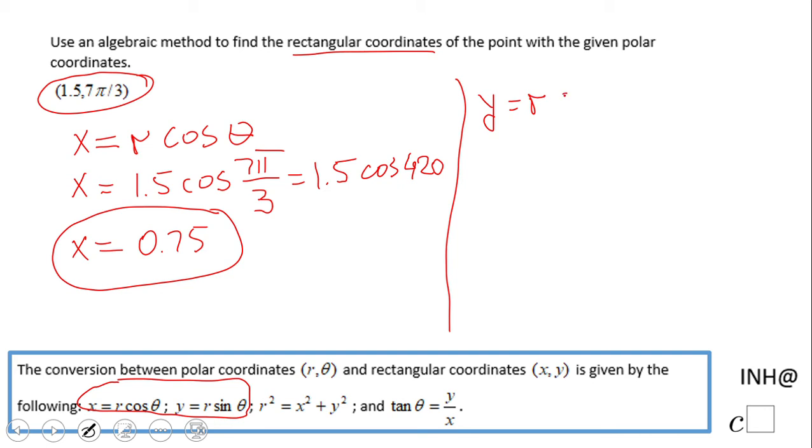Which is going to be y equals 1.5 sine of 7π over 3. And like I said, let's try to do this one in a different way without a calculator. 7π over 3 minus 2π, which is 6π over 3, will be π over 3, right? So that means I can replace this with π over 3.